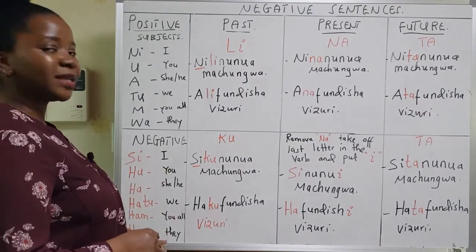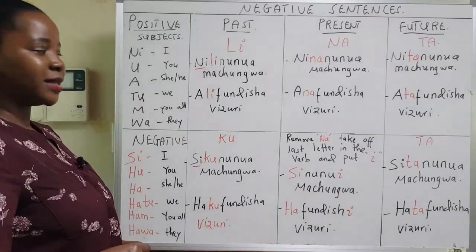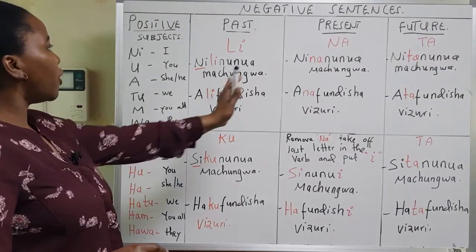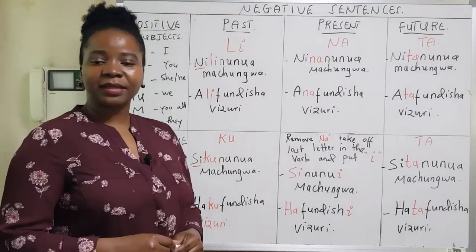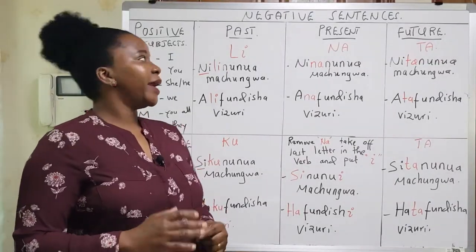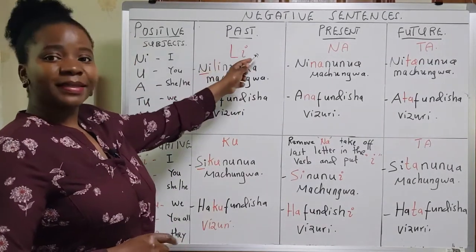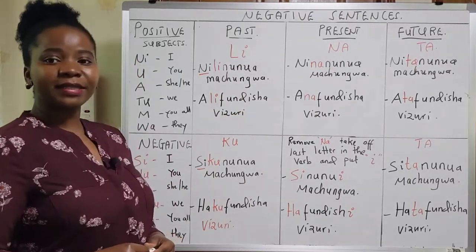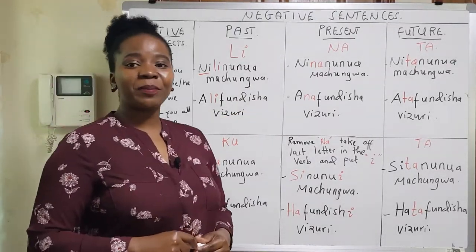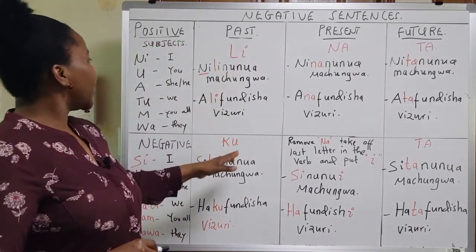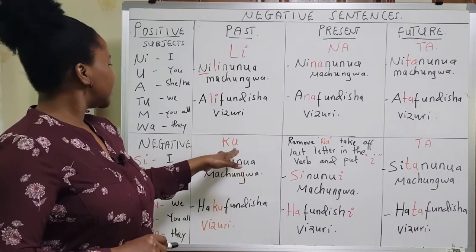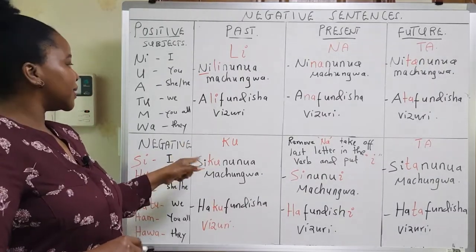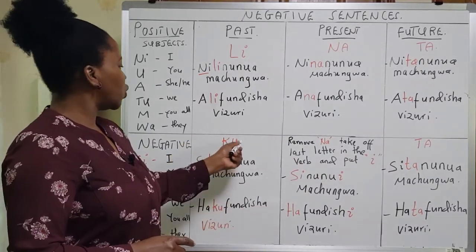In making a negative or positive sentence, you start with the subject and then move to the tense marker. For past tense, we use li for positive sentences and ku for negative sentences.